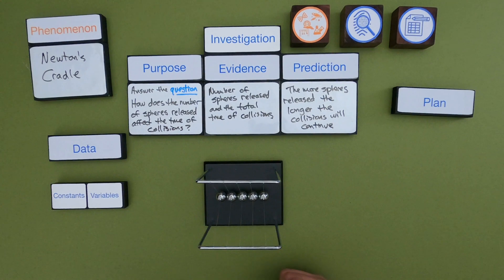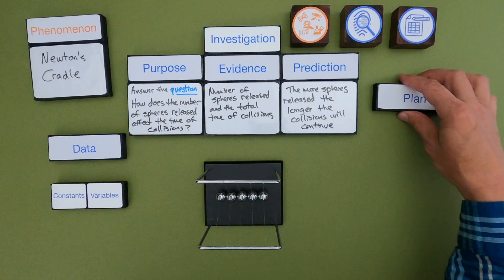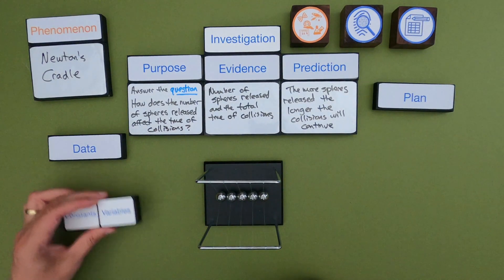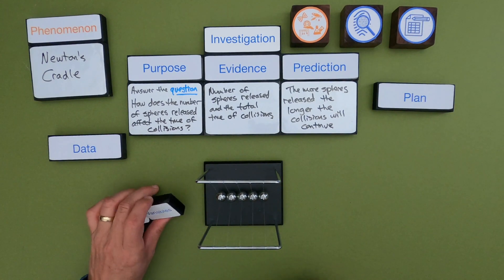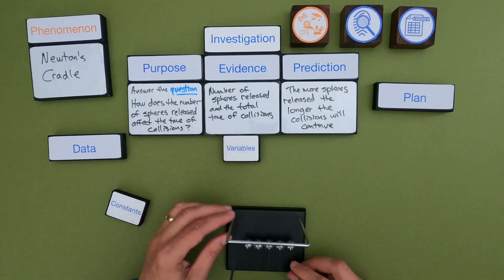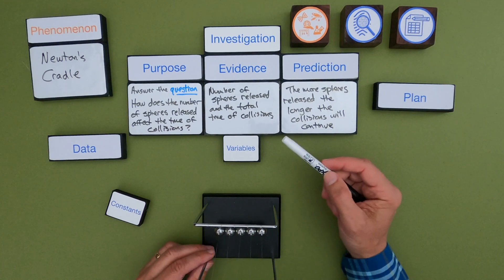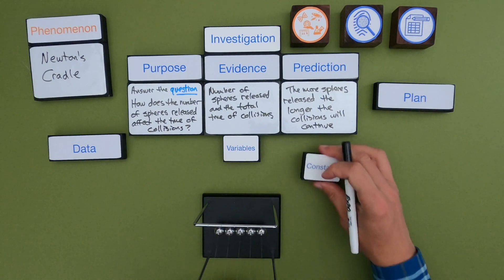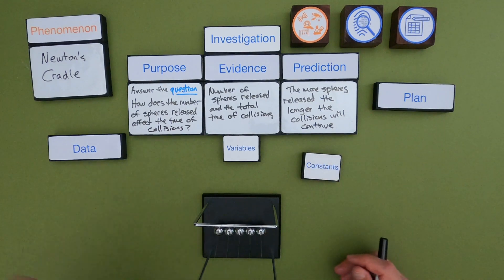Now I want to think about what my plan is going to do — the steps I would follow to do this investigation. As I do that, I really want to think about what are some things I keep constant. The variable I'm going to change is the number of spheres that I'm releasing, and then another variable is going to be how long those will last. Before I do the whole plan, I want to think about what are the things I want to keep constant in this investigation.